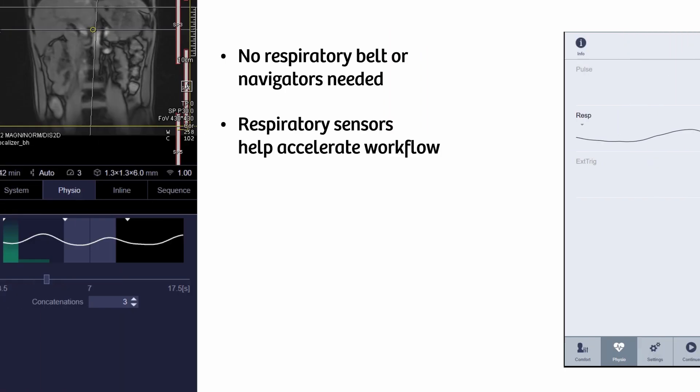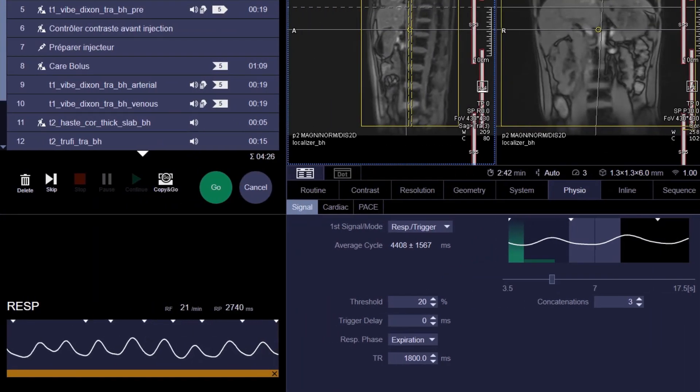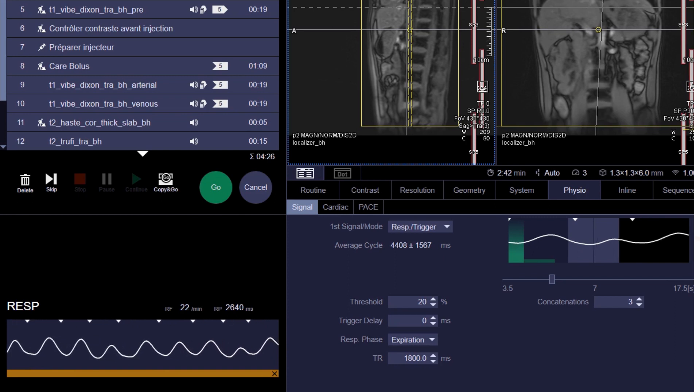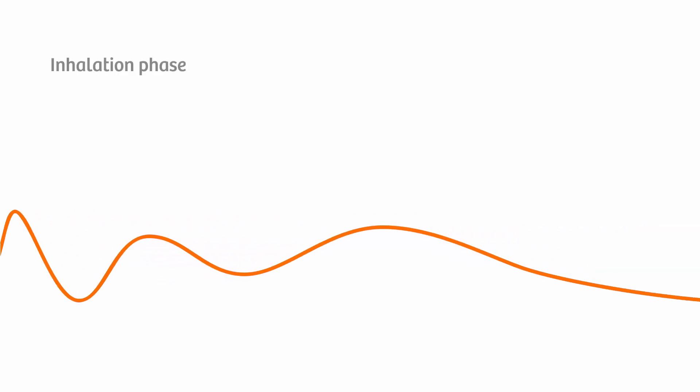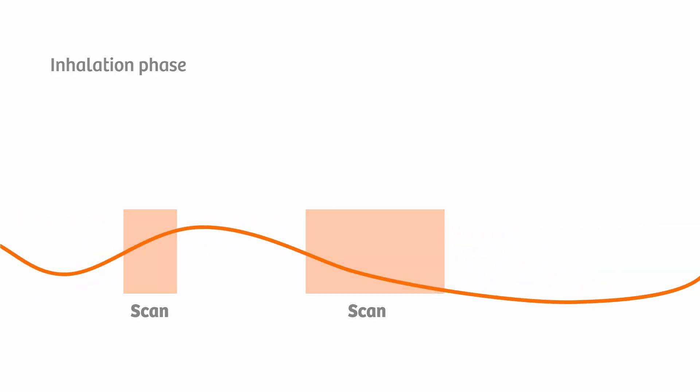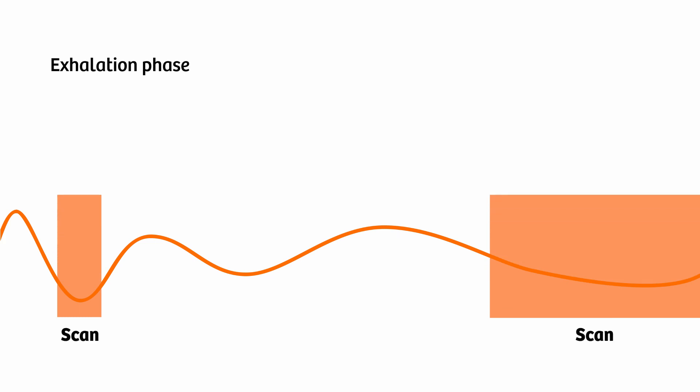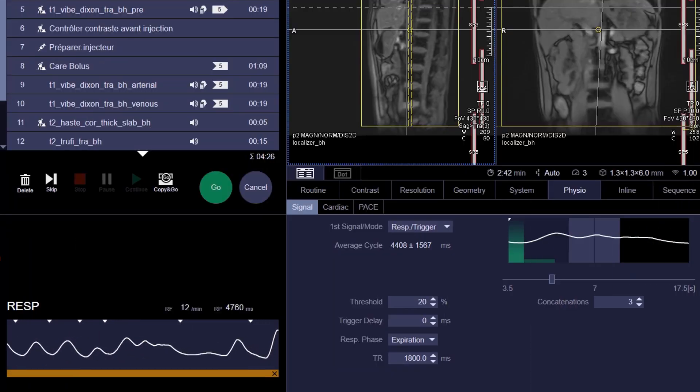The console provides visual feedback of the patient's respiration during the entire examination. For respiratory triggering, simply choose the desired scan phase such as the inhalation phase or the exhalation phase, and sequence triggering is done with no additional effort.